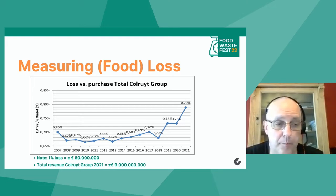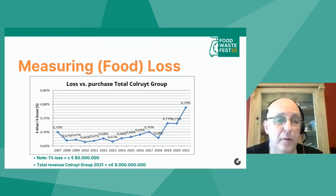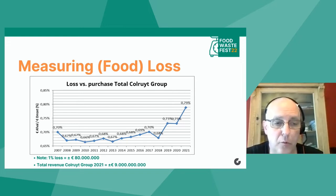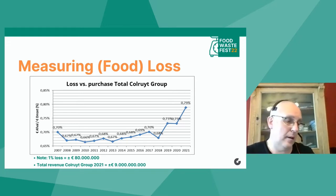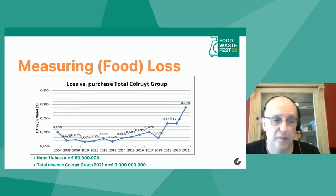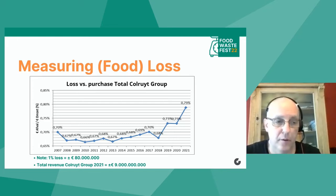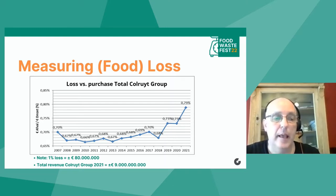To give you some indication of how much revenue that figure represents: in 2021 Colruyt Group had a total revenue of about 9 billion euros. So you don't have to be Einstein to know that one percent of product loss represents approximately 80 million euros a year.